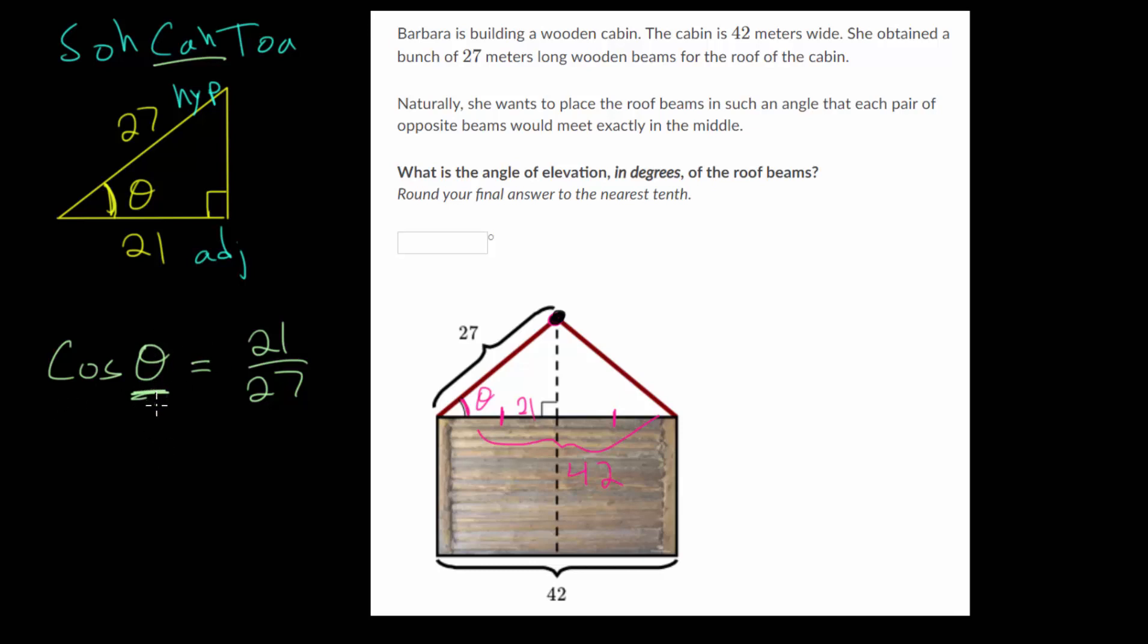And whenever you're missing the angle, and you can't plug in an angle here, you want to use your inverse trig functions. So to do that, remember we need to understand that if we put the cosine function, or any trig function, inside its inverse function,